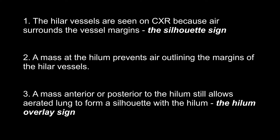The hilum overlay sign. On a chest radiograph, the hilum vessels are seen because the interface of the vessel with the aerated lung at the hilum is tangential to the x-ray beam, and this is the nature of the silhouette sign. A mass at the hilum will obscure the vessels from view if the mass is right up against the vessels, and if a mass is anterior or posterior to the hilum, this will allow the hilum to be seen, and this is the nature of the hilum overlay sign.